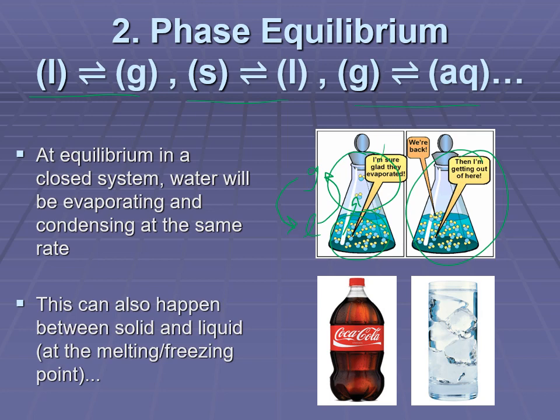This also happens with things like dissolved carbon dioxide. Keep the lid on, and it's not stopping the carbon dioxide from coming out of solution, but it allows the carbon dioxide to go back into solution at the same rate, so the pop doesn't go flat. If you had ice water at zero degrees, it's not that the ice isn't melting — it's just that it is melting and freezing at the same rate. It's at a state of equilibrium, so you don't see any macroscopic changes.